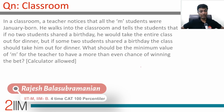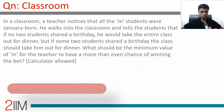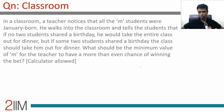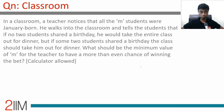First problem: in a classroom, a teacher notices that all M students were January-born. He walks in and tells the students that if no two students shared a birthday, he would take the entire class out for dinner. But if some two students shared a birthday, the class should take him out for dinner. What should be the minimum value of M for the teacher to have a more than even chance of winning the bet? Calculator allowed.